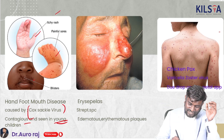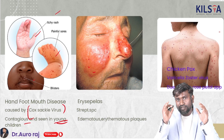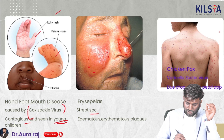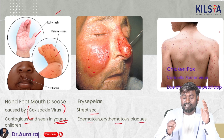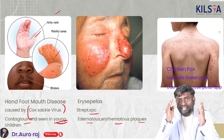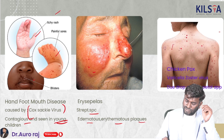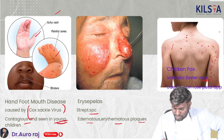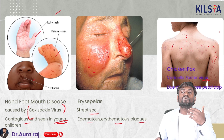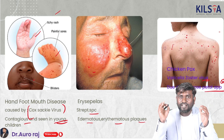This image is erysipelas. The important causative organism is Streptococcus species. It presents with edematous, erythematous plaques. This image shows chickenpox, caused by varicella-zoster virus. The classic finding is a 'dew drop on rose petal' appearance, which is characteristic of chickenpox caused by varicella-zoster.